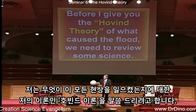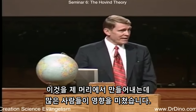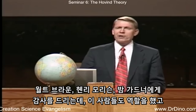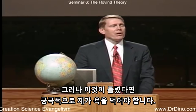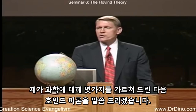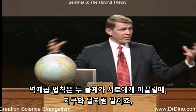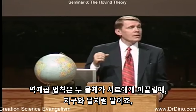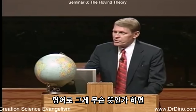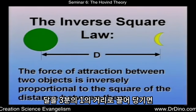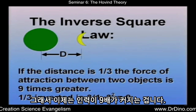I'm going to give you the Hovind theory of what caused all these phenomena. I need to review a little science first. The inverse square law tells us that if two objects are attracted to each other, like the earth and the moon, the force of attraction is inversely proportional to the square of the distance between them. In English: if you bring the moon to one-third the distance, you flip the one-third, square it, and it's now nine times the gravitational pull. Inverse square laws apply when dealing with gravity, light, magnetism — and girls.